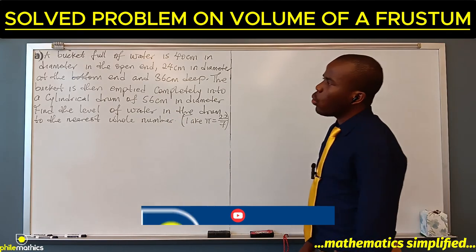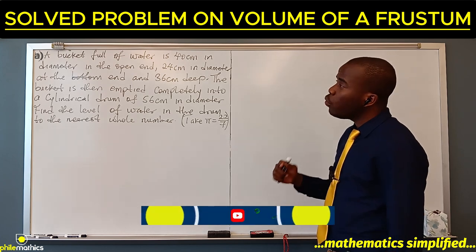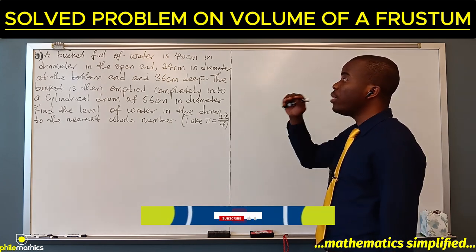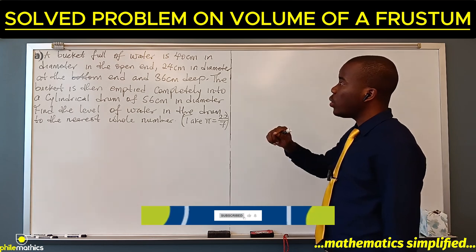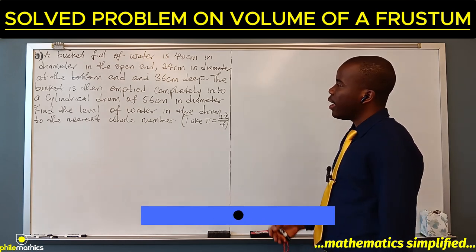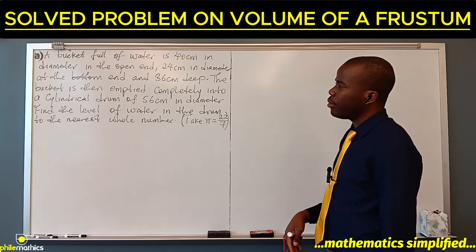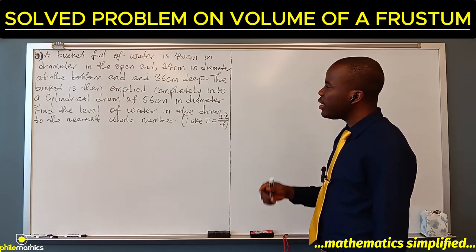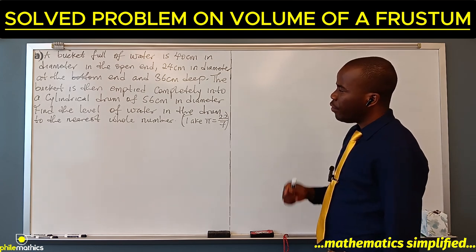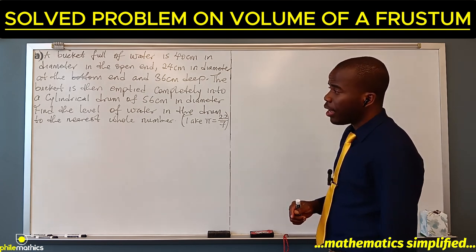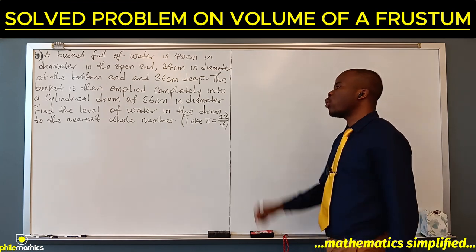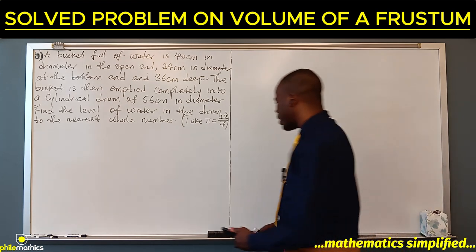It's an interesting question. It says a bucket full of water is 40 cm in diameter at the open end, 24 cm in diameter at the bottom end, and 36 cm deep. The bucket is then emptied completely into a cylindrical drum of 56 cm in diameter. Find the level of water in the drum to the nearest whole number. Let's sketch it so we get a picture.